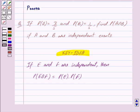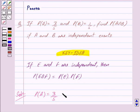Let us begin with the solution now. We are given that probability of A is equal to 3 upon 5 and probability of B is equal to 1 upon 5.